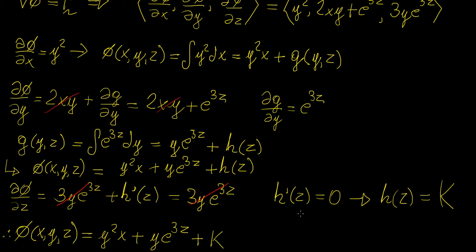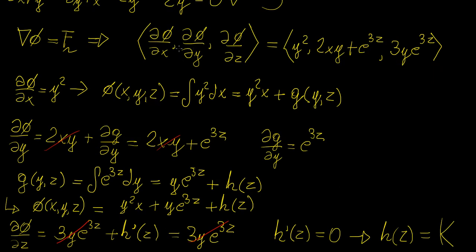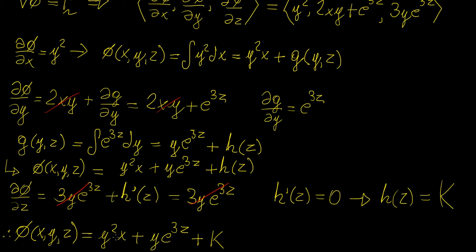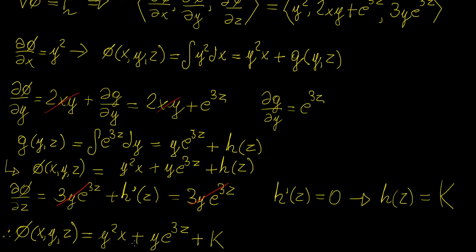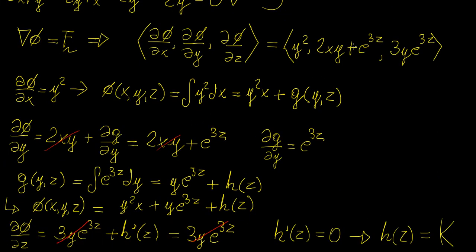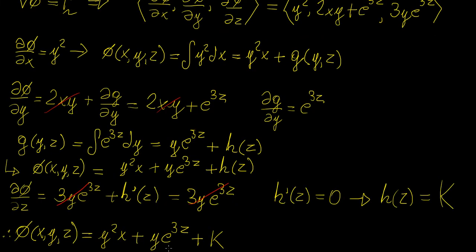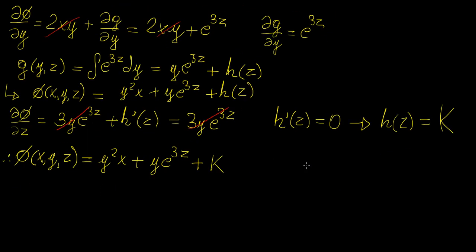We can verify this by taking the gradient of the potential function and comparing term by term. Differentiating xy² + ye^(3z) + k with respect to x gives y². Differentiating with respect to y gives 2xy + e^(3z). Differentiating with respect to z gives 3ye^(3z). These match the original vector field components exactly, confirming the answer is correct.